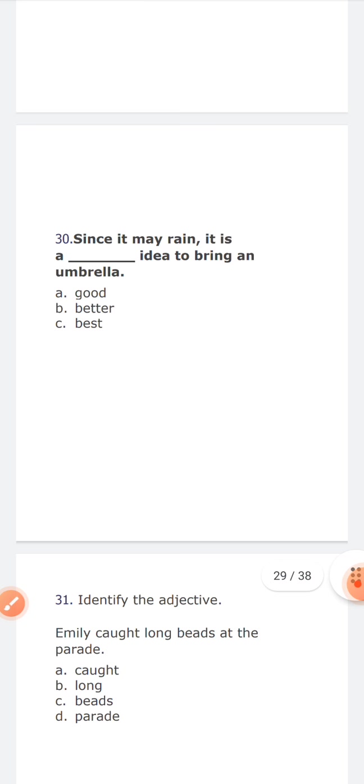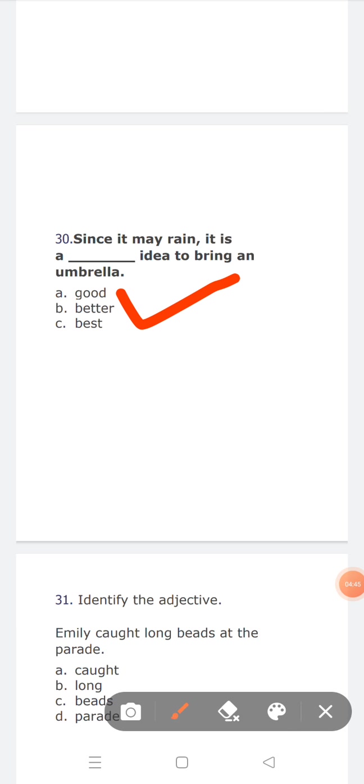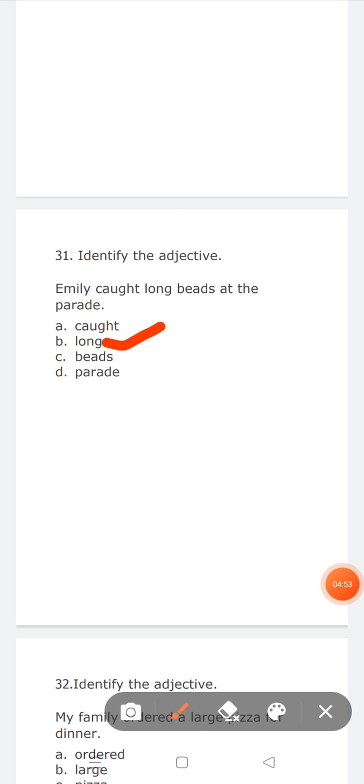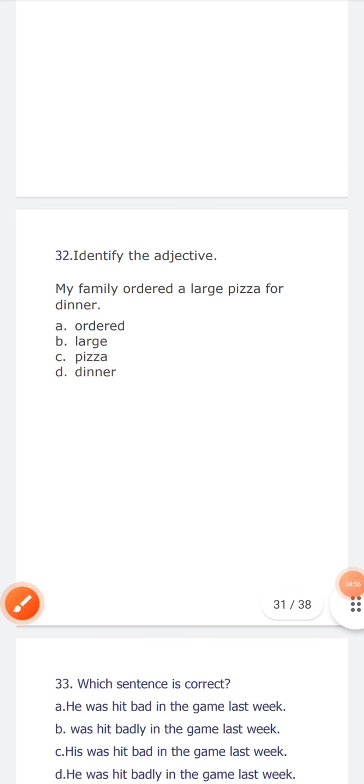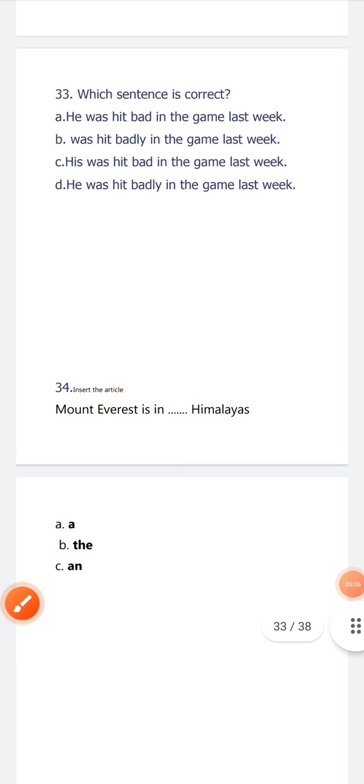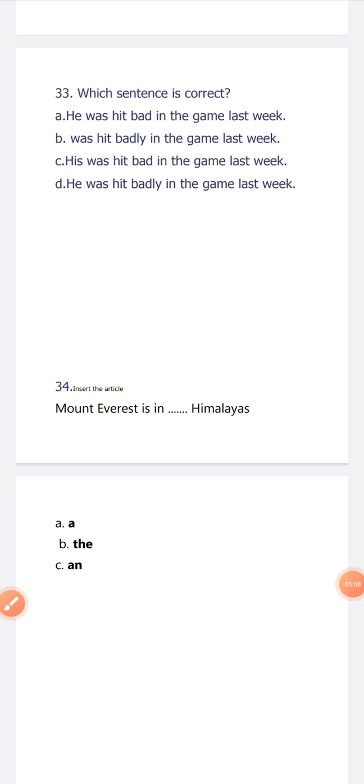Identify the adjective. Emily caught long beads at the parade. So what is the adjective here? Adjective here is long. Now identify the adjective. My family ordered a large pizza for dinner. What is the adjective here? The adjective here is large. Which sentence is correct? He was hit badly in the game last week. Last one is the correct statement.